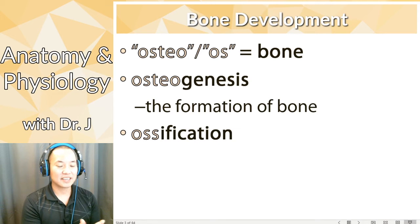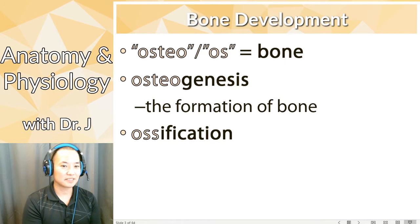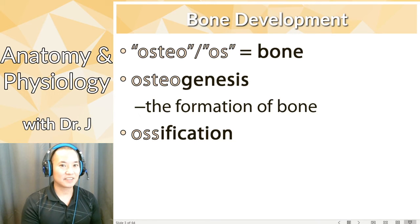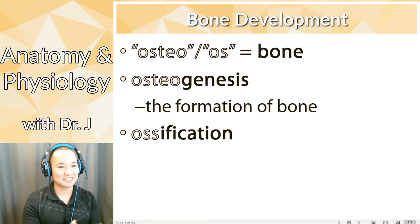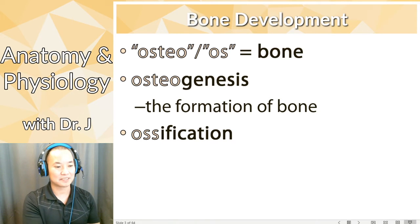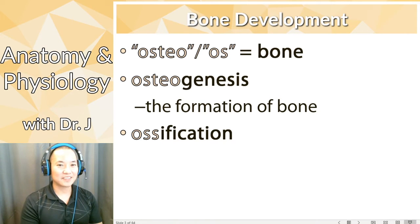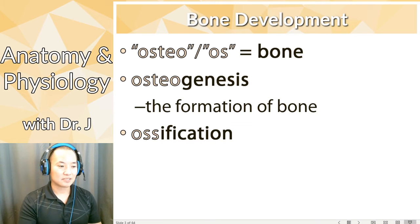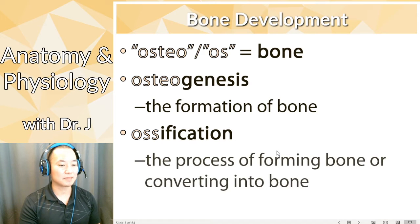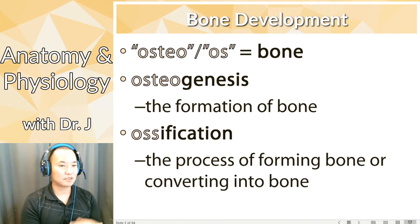Now ossification — so what does that mean? The suffix -ification, like identification means you're in the process of identifying something, or indemnification means you're in the process of indemnifying something. So -ification is like saying you're in the process of becoming something. If os means bone, that means it's becoming bone — you're converting something into bone.